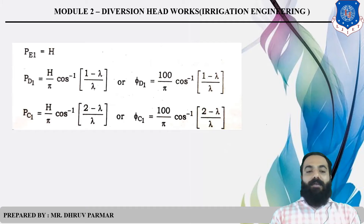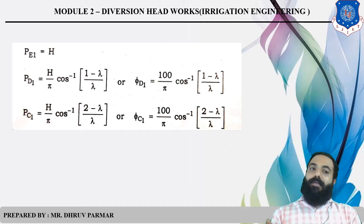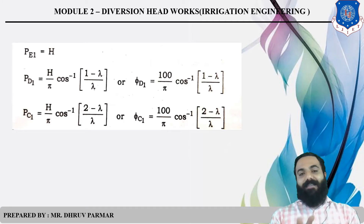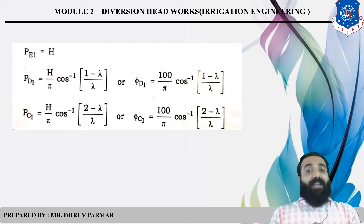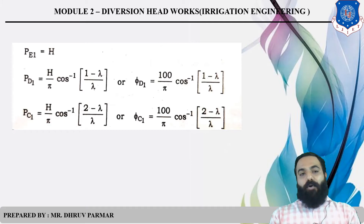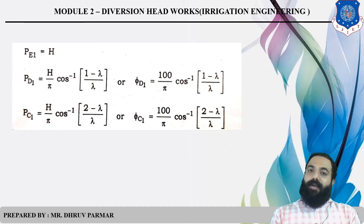This is the formula for the upstream section. You can find the uplift pressure at various points: upstream point, downstream point, and intermediate point.